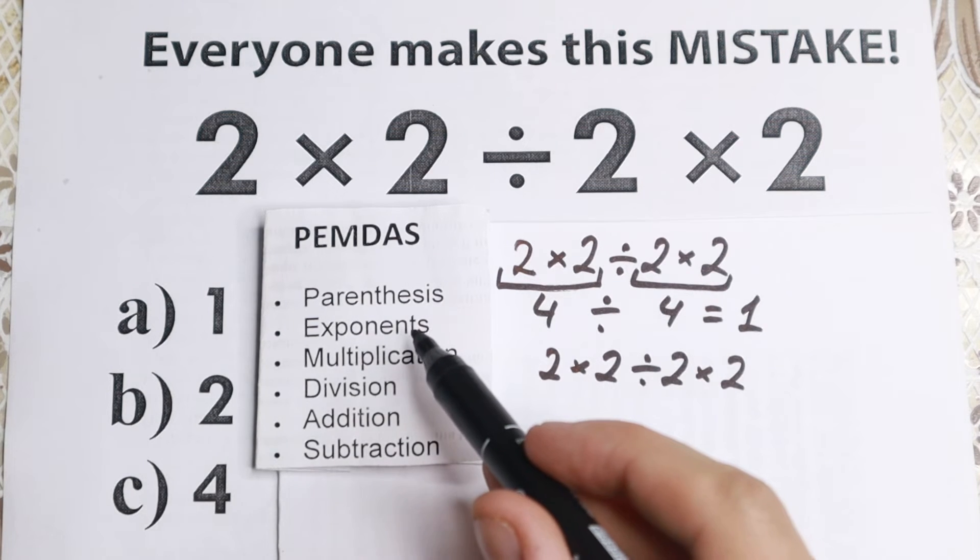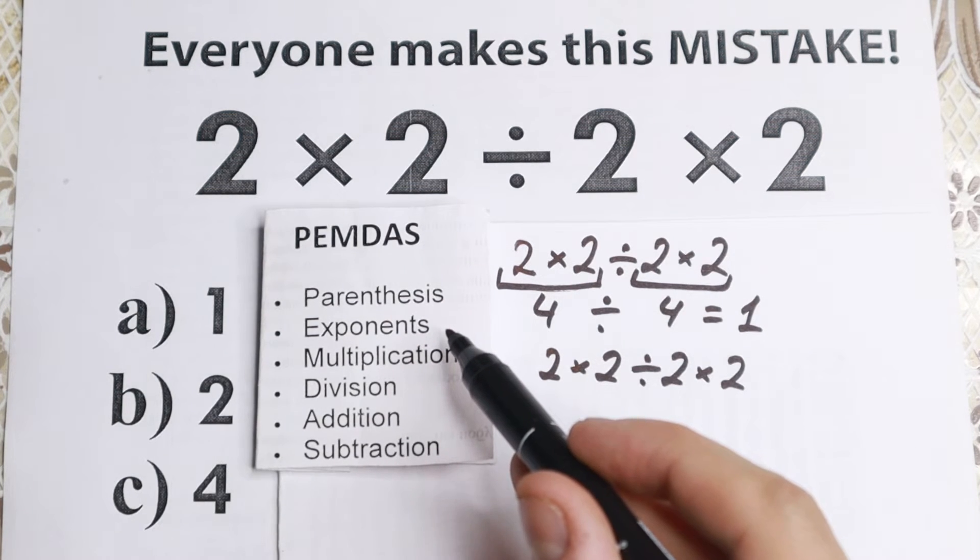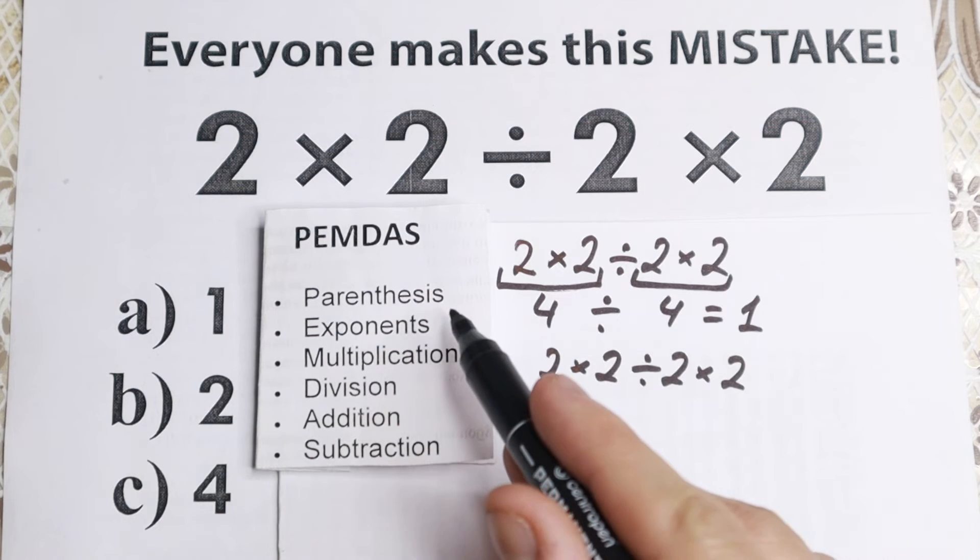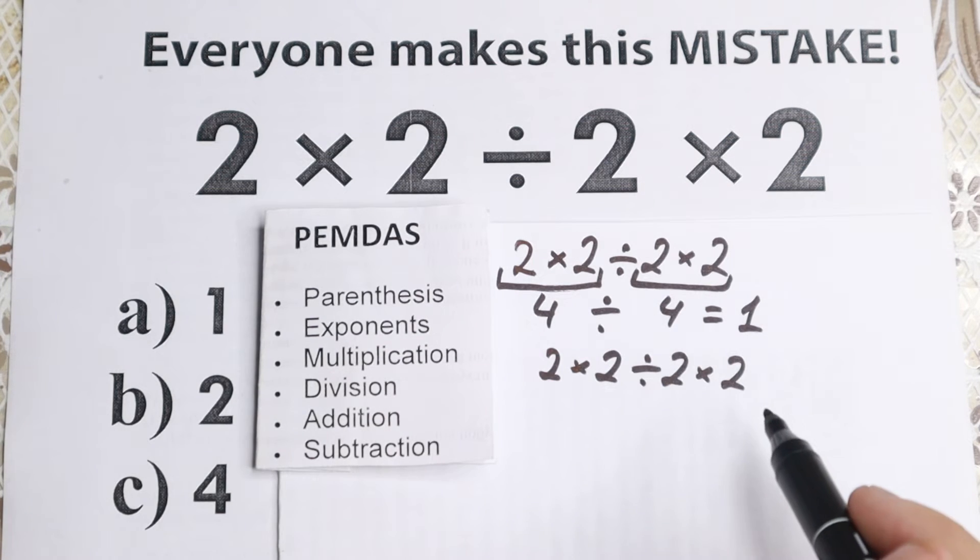The first step is parentheses. Are there any parentheses right here? So no, I don't see any of those. I don't see any exponent because this is the second step. I don't see an exponent right here. So we just skip this part. Parentheses, exponent, we skip this part. The next step, multiplication and division.